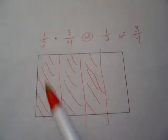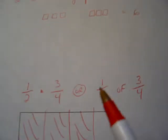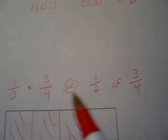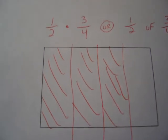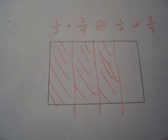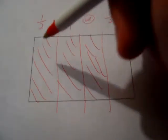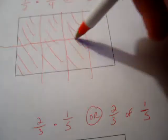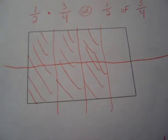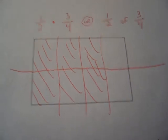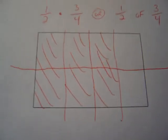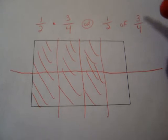Now of these 3 fourths, I need to take half of it, which is multiplying by half. So how I'm going to do this visually is the following. I'm going to cut the whole pan of lasagna in half the other way down the center, and using another color for clarity, I'm going to shade in half of the lasagna pan.